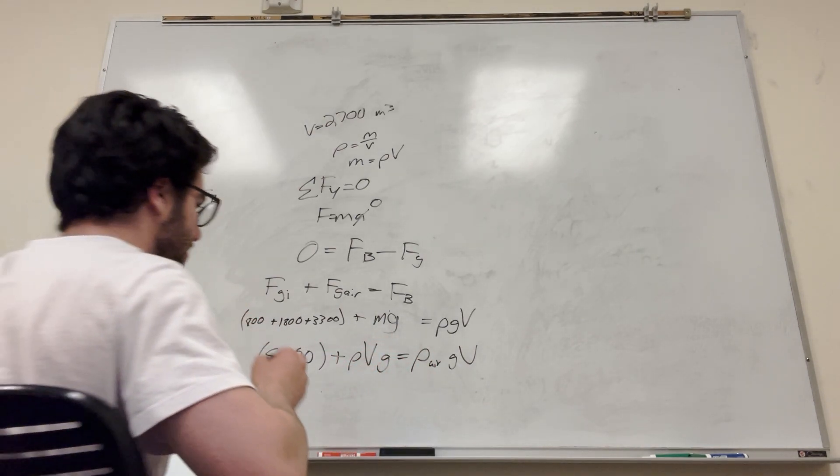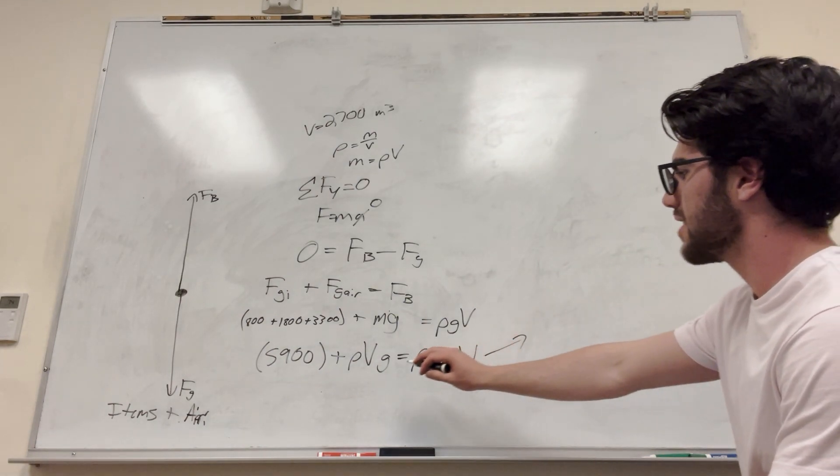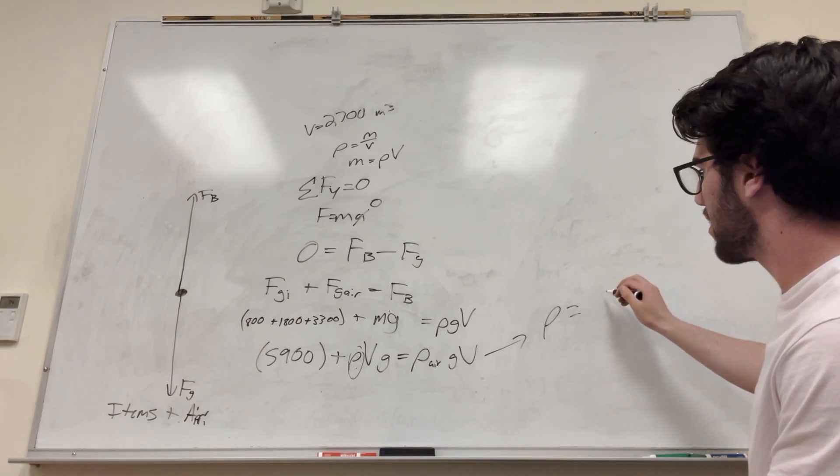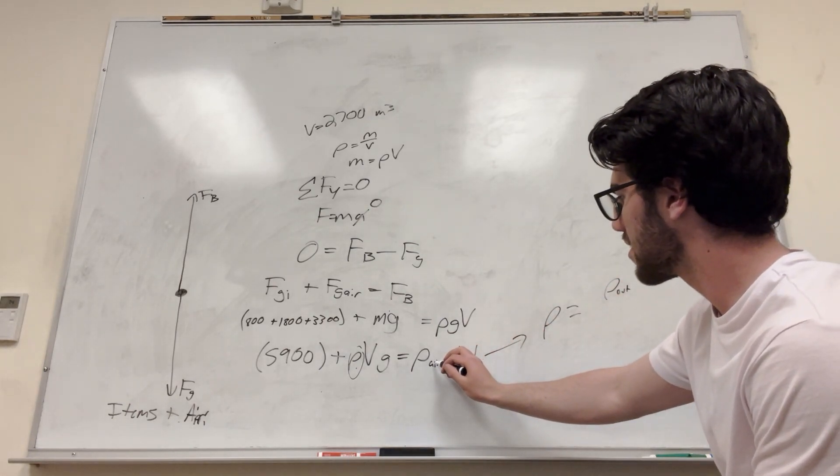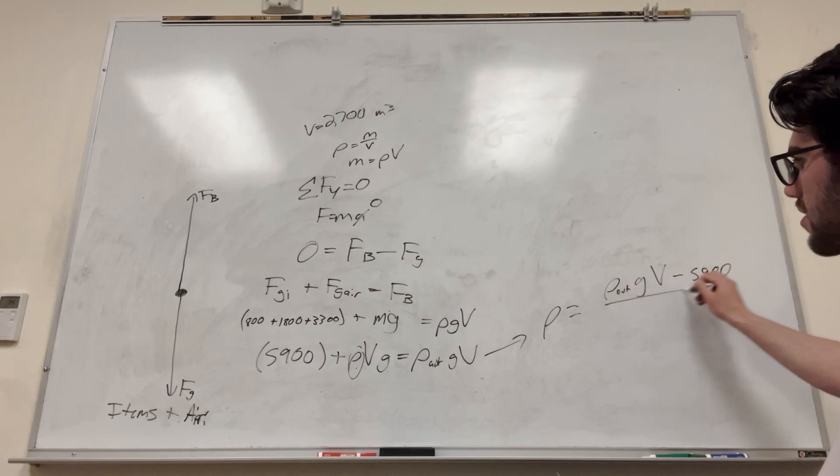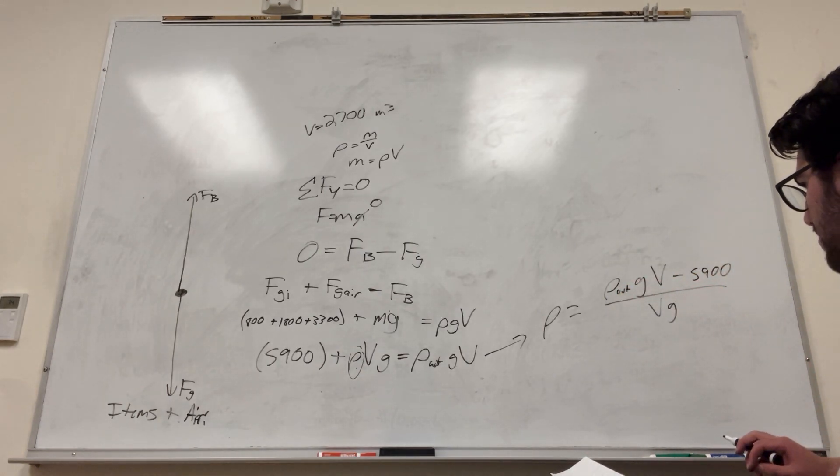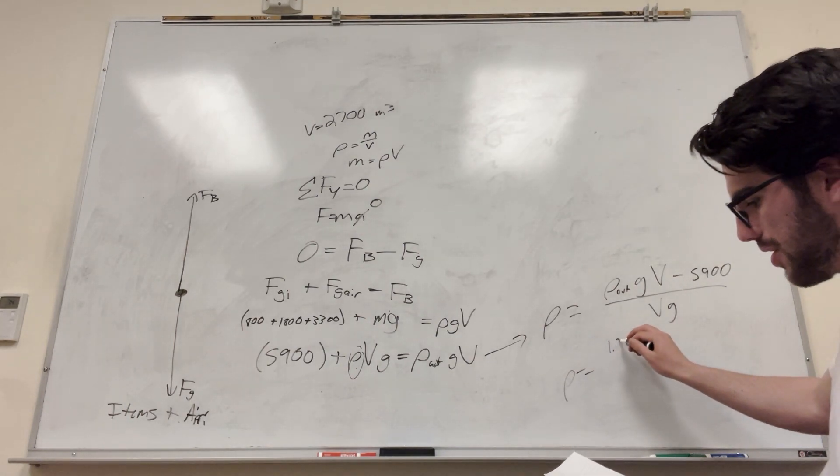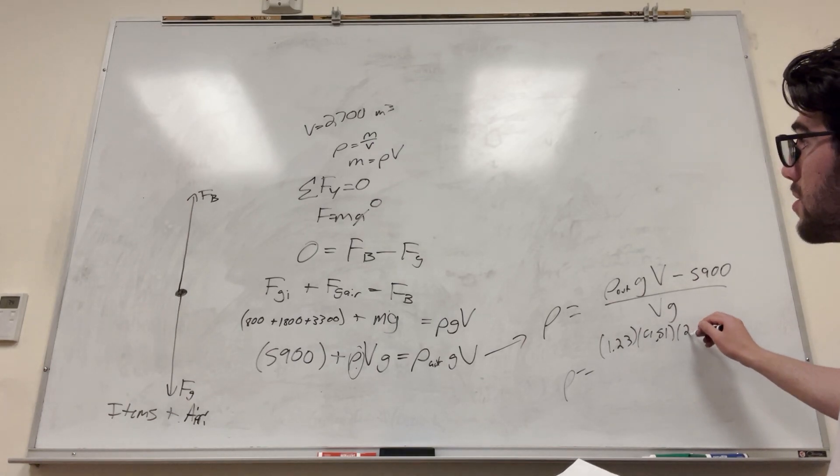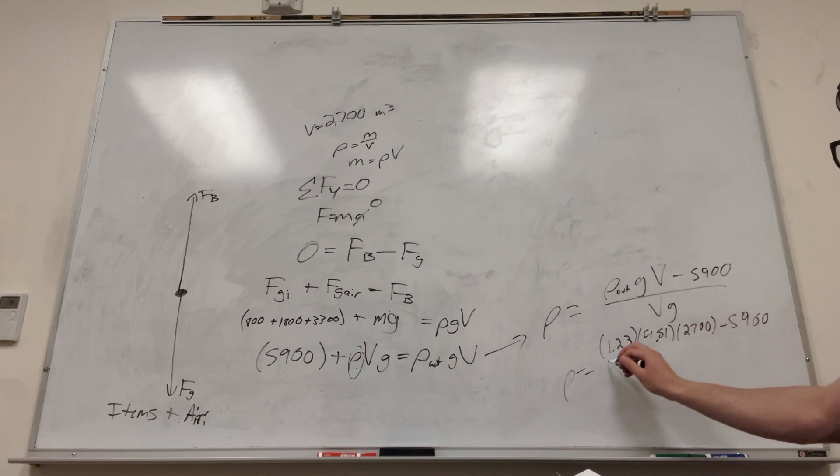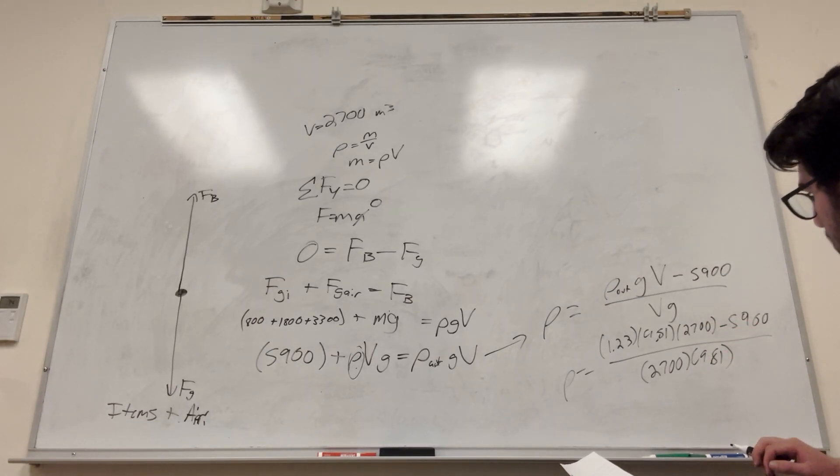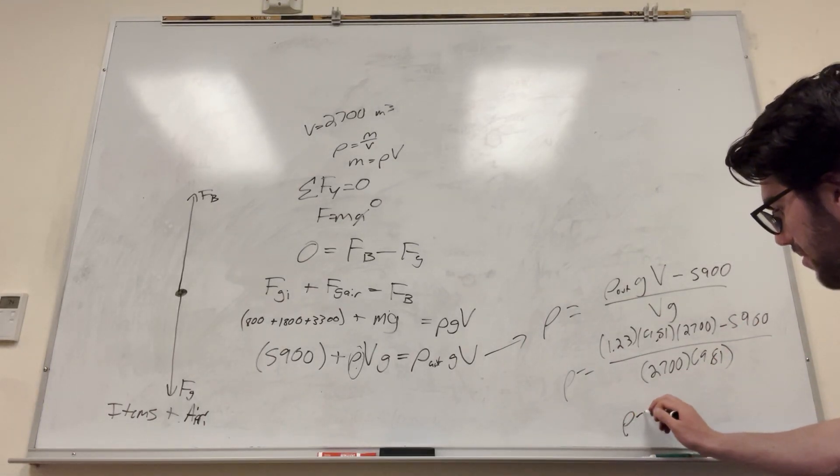So let's just plug in our numbers. So we're trying to find density of this. So density, if you rearrange it, you're going to get density outside, which is this, times gravity times volume, and then minus 5,900 divided by volume gravity. So you plug in our numbers for this. So this is 1.23 times 9.81 times the volume, 2700 minus 5,900, and divide that by 2700 times 9.81. And then get a number for that, and that density is equal to 1.01.